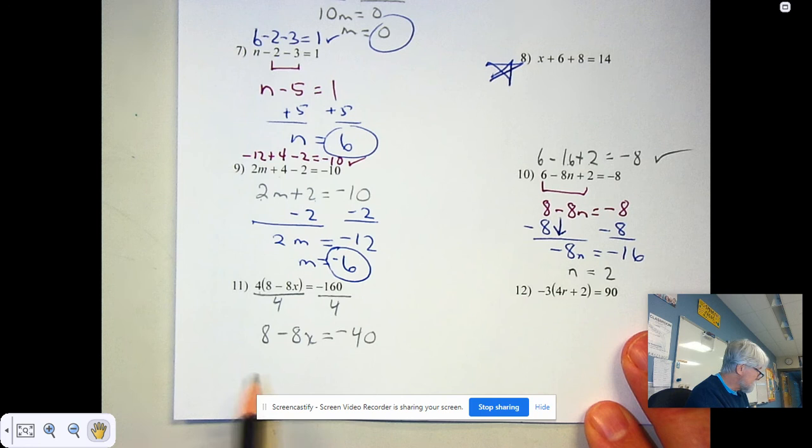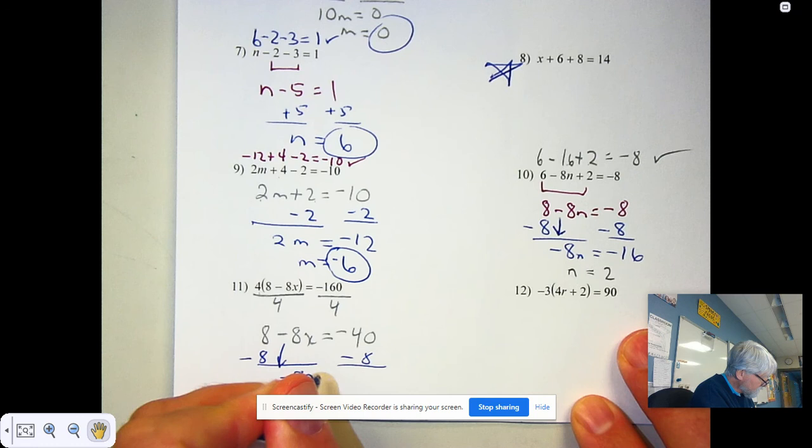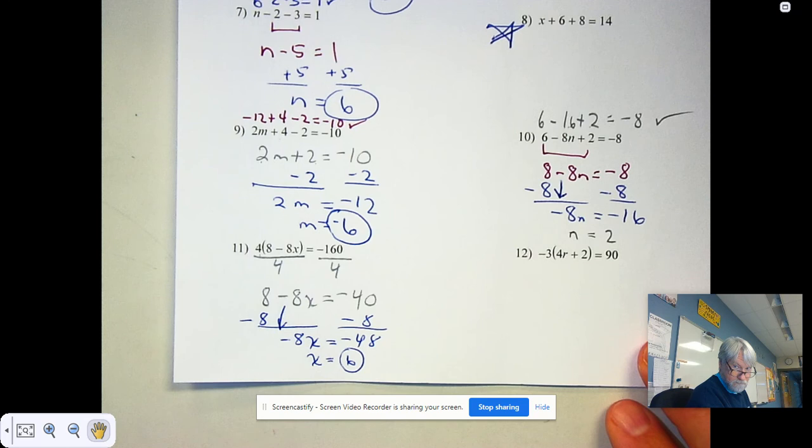Subtract 8 from both sides. And our minus, remember, minus 8x will equal negative 48. Divide by negative 8 to get our answer of 6.